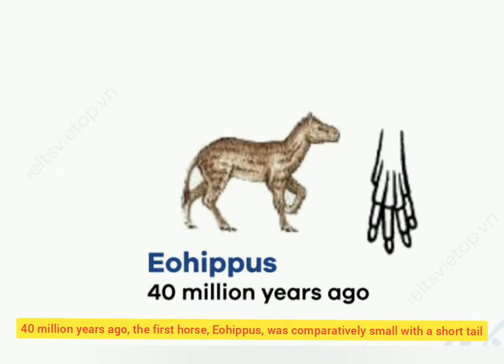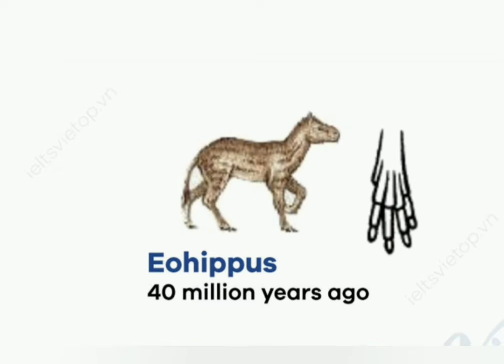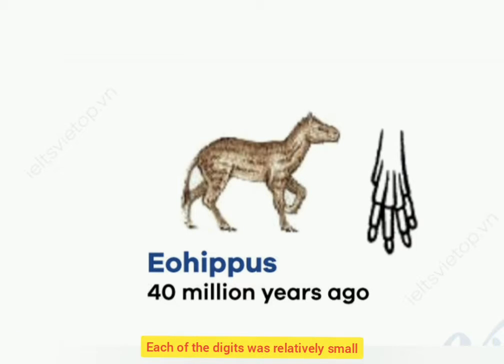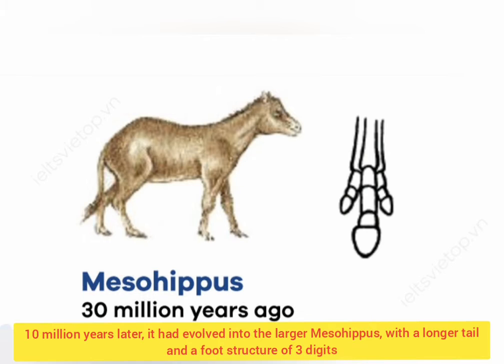40 million years ago, the first horse, known as Eohippus, was comparatively small with a short tail. Its defining characteristic, however, was the structure of its foot, which had four digits. Each of the digits were relatively small.